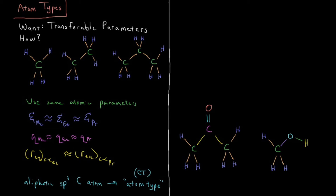In acetone, we have two carbons on the outside — those are sp3 carbons bonded to another carbon, so they're probably pretty similar in atomic parameters to the sp3 carbons in the alkanes. The CH bond lengths and stiffness are probably similar. But this carbon is double-bonded to an oxygen — that's a carbonyl carbon — so it's probably a different atom type. And this oxygen obviously has its own parameters. This bond may be slightly different because this carbon is bonded to such an electronegative atom.